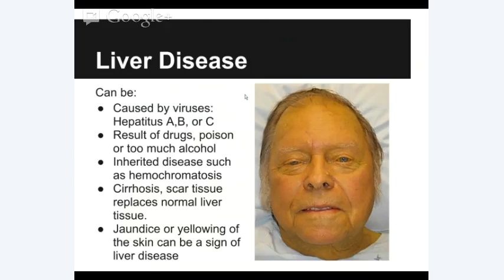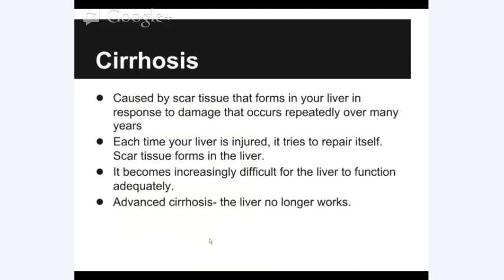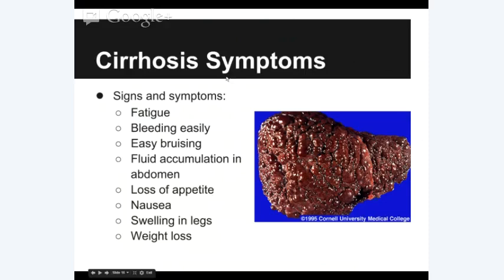If you have liver disease — which can be caused by hepatitis, drugs, poison, or too much alcohol — you can end up with cirrhosis, which can then lead to jaundice. Cirrhosis is caused by scar tissue that forms in the liver in response to damage occurring repeatedly over many years. Each time the liver is injured, it tries to repair itself, but scar tissue can remain. Over time, with a lot of scar tissue, it becomes increasingly impossible for the liver to repair itself. Once it reaches a certain point, the liver no longer works — and without it performing those 500 different functions, your body will begin to shut down.